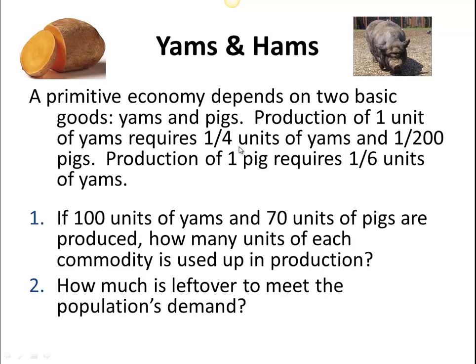So in this particular example I'm doing yams and hams. I'm looking at an economy that has two sectors: the yam sector and the ham sector — basically the agricultural and the meat sector. And so we have information about the production process, how much we use up of each item, some of our resources, in order to produce things.